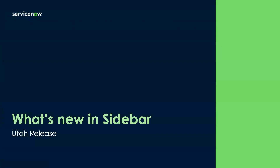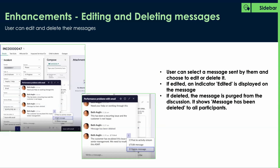Let's get into what's new in sidebar for the Utah release. We've added more enhancements. Now participants in sidebar discussions can edit and delete their messages. Any message that's been deleted shows a 'message has been deleted' notice to all participants within those discussions. Likewise, if a message has been edited, it tags the message showing it's been edited — visible to all participants so they know to go and look into it again. This feature is available by right-clicking on a message and choosing to edit or delete it.